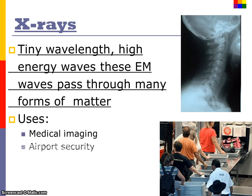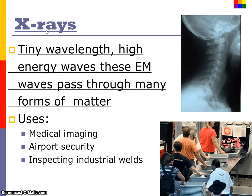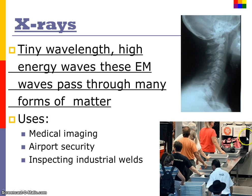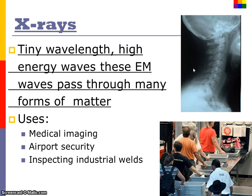Moving on to even more powerful electromagnetic radiation — x-rays. As the wavelength gets smaller, the frequency is higher and it's more powerful. X-rays can travel through our bodies — this is how we see our bones in x-rays and how we scan things at airports. They're so strong they pass through a lot of matter, but they don't pass easily through our dense bones, while passing more easily through our less dense skin. Too much exposure to x-rays is very dangerous.